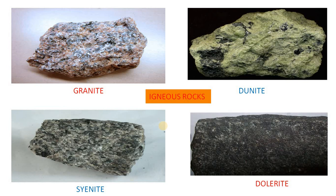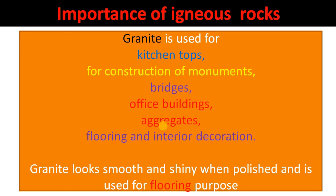These are some of the igneous rocks — have a glance at granite, junite, cyanite, dollarite. The importance of igneous rocks: granite especially is used for kitchen tops, and also for the construction of monuments, bridges, office buildings, aggregates, flooring purposes, and interior decoration. Granite rock looks smooth and shiny when polished, which is why it is mostly used for flooring purposes.